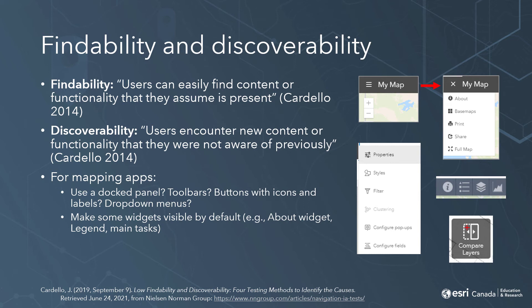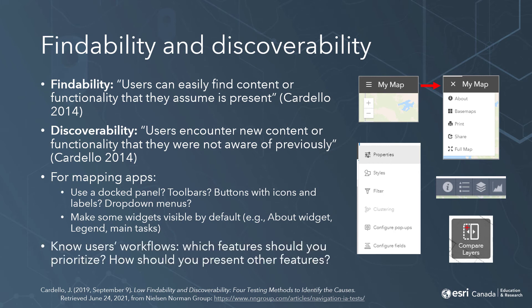For example, toolbars work well for programs with a lot of functionality, and drop-down menus work well for functions that don't need to be used as often. For simpler apps, you might focus on clearly labeled buttons within the interface, or showing the main functionality in panels by default. This goes back to the need to understand your users first, know what to prioritize for them, and test the design with these users as you go, rather than relying on your own guesswork.